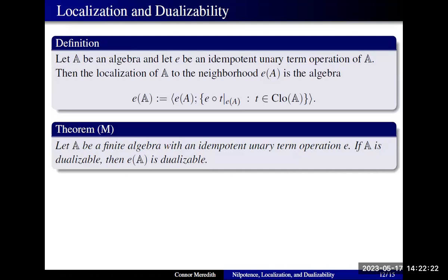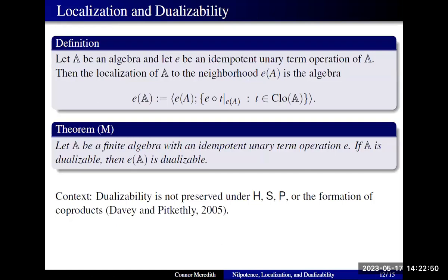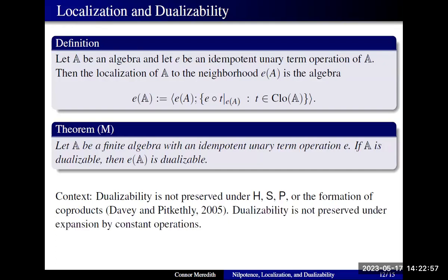We designed an algebra with a super nilpotent non-abelian localization, concluded that localization is non-dualizable, and then obtained that our original algebra is non-dualizable. Something interesting about this preservation result is that dualizability is actually a fairly fragile property — it is not preserved under the formation of homomorphic images, substructures, powers, products, or expansion by constant operations. But it turns out that localization does preserve dualizability.